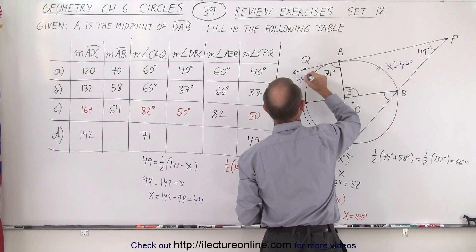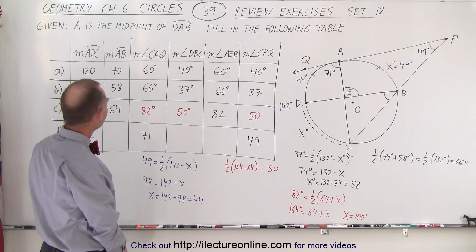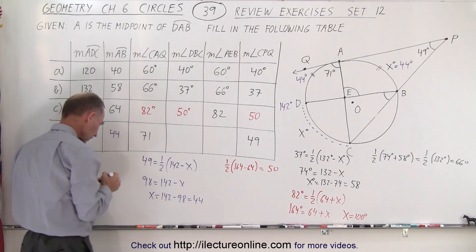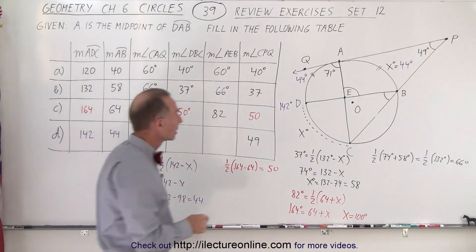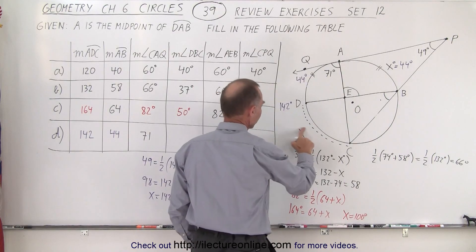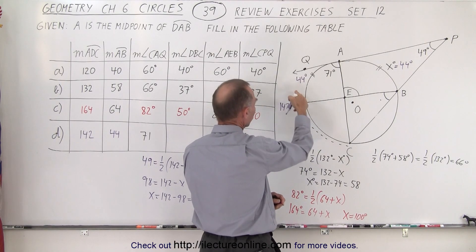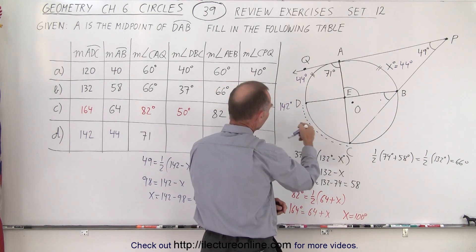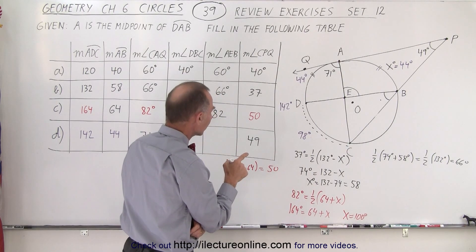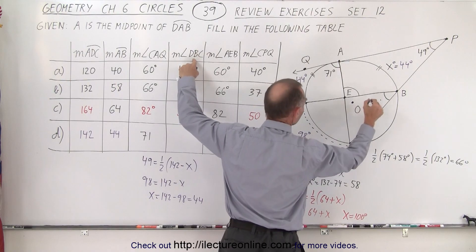So X equals 142 minus 98, which is 44. Now we know that this here is 44 degrees, which means this here is also 44 degrees because they have equal measure. The measure from A to B is indeed 44 degrees. Notice that arc DC is 142 and arc AB is 44, so the difference between those two gives us this arc length, which is therefore 98 degrees. 98 plus 44 gives us 142. Since that arc is 98, angle DBC would be half of 98, or 49 degrees.